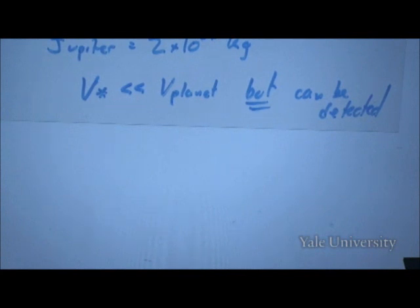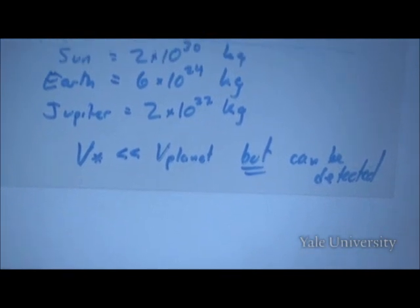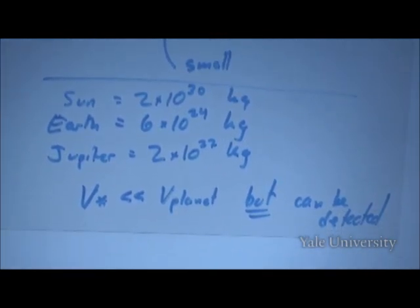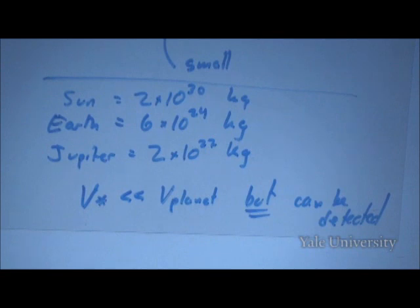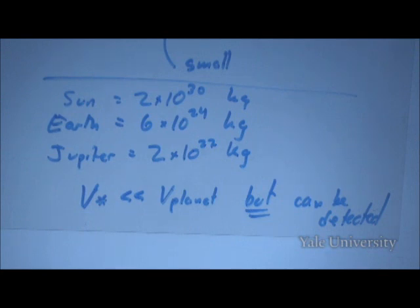Now, what do we expect to see? Supposing you can go out and — through means we'll actually talk about on Thursday — actually measure the velocities of stars in response to planets. What you expect to see depends on what your expectations for solar systems are. We've got one example; ten years ago we had only one example. So you have to take what you know about our own solar system and infer what other solar systems might look like. At this point I want to show you some things about our own solar system.